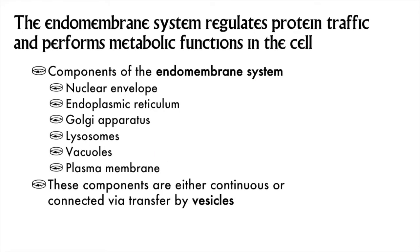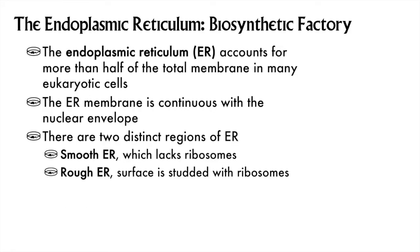We continue our tour of the cell with the rest of the membrane-bound organelles — eukaryotes only. The endomembrane system is made of all the organelles on this list. We've been introduced to the nuclear envelope and said a brief hello to the endoplasmic reticulum. So now we'll round up this half of Chapter 6 with more information about the endomembrane system.